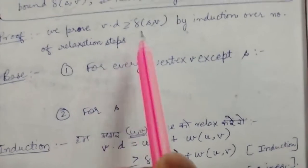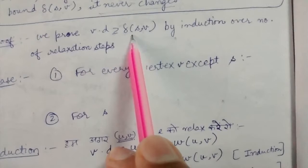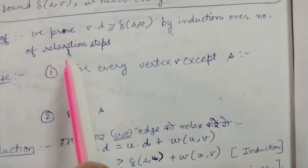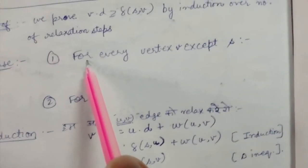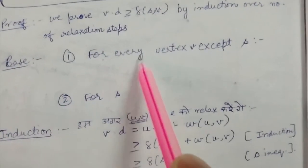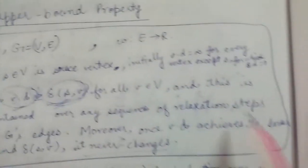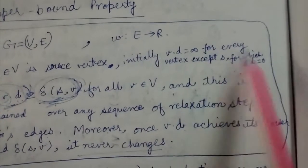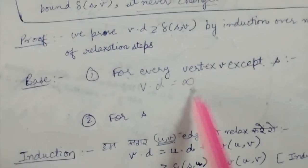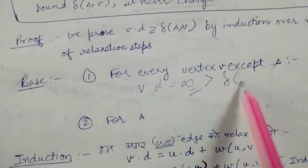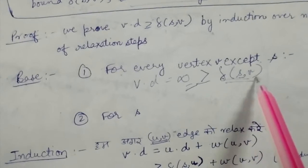We will prove that v.d is greater than or equal to δ(s, v) by induction over the number of relaxation steps. For the base case, for every vertex v except s, we initialized v.d as infinity. Infinity is definitely greater than or equal to any actual distance δ(s, v), whatever value we will finally reach.